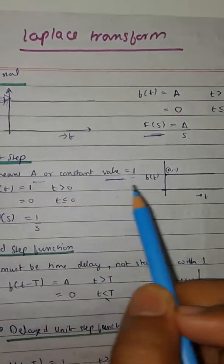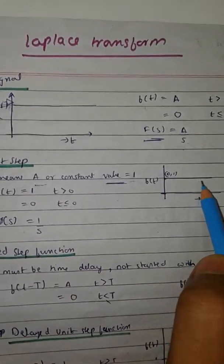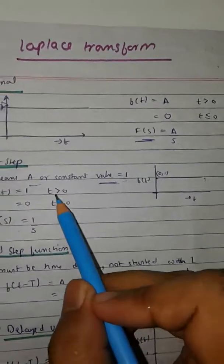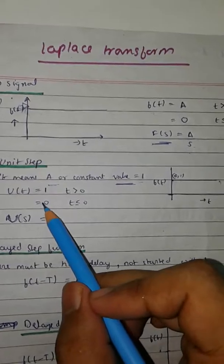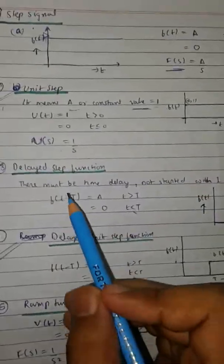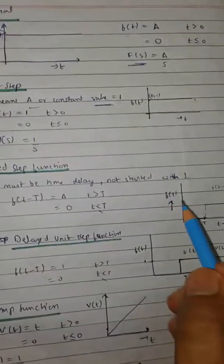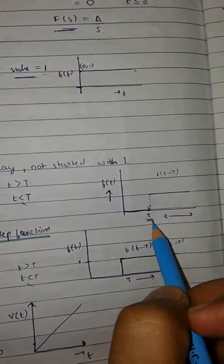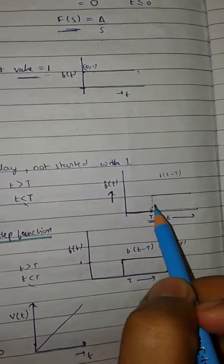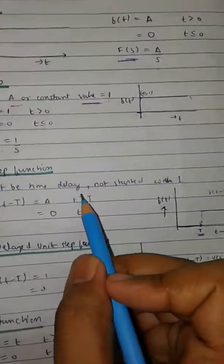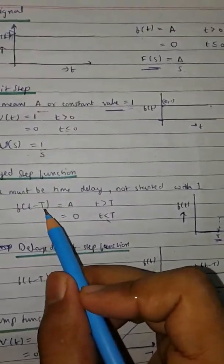Similarly, you can make it a unit step where the value of A, or amplitude, is 1. Its Laplace will be 1 by s. For t greater than 0 it is clearly 1, and for remaining values it is 0.